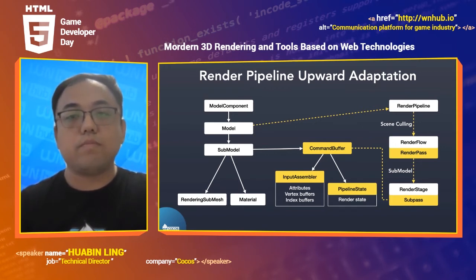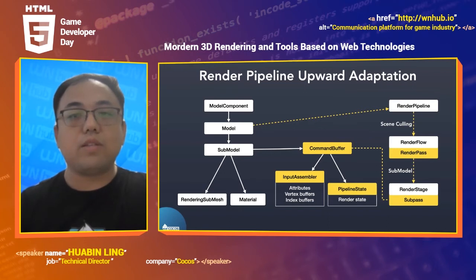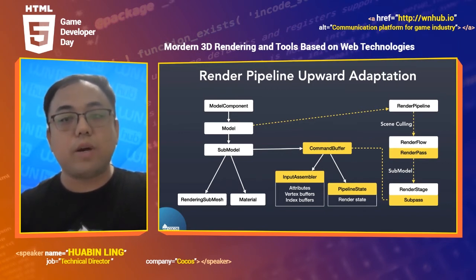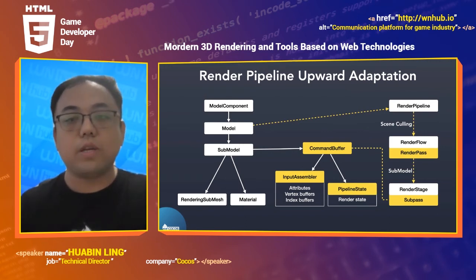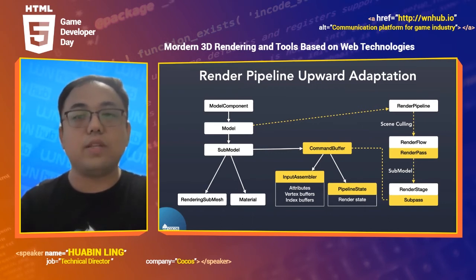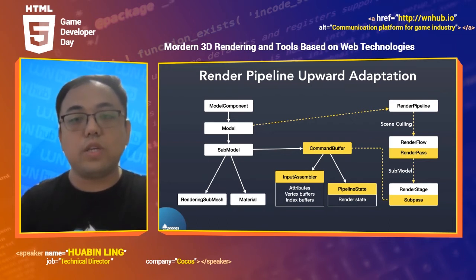Render information means input assembler and pipeline state in command buffers. Each command buffer corresponds to a subpass. Input assembler defines the geometry of the model; pipeline state defines GPU-related setups including shaders, UBO, depth-stencil state, etc. The interesting part is that all of these elements — command buffer, pipeline state, input assembler, render pass, subpass — are all built into Vulkan but absent in WebGL. What we have done in GFX WebGL is to implement these types using basic GL commands so that we can safely use them in the renderer.